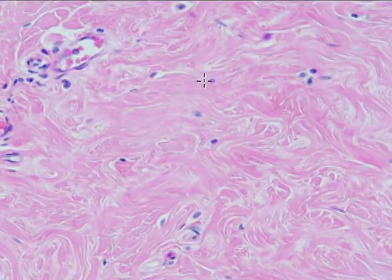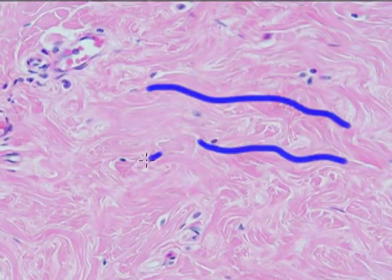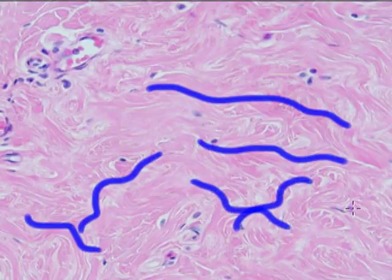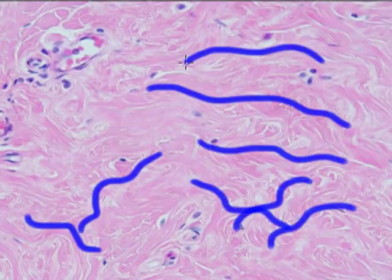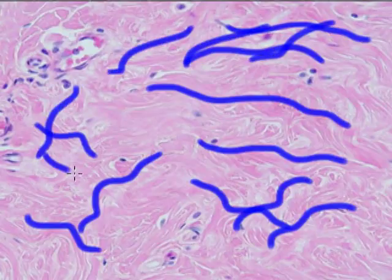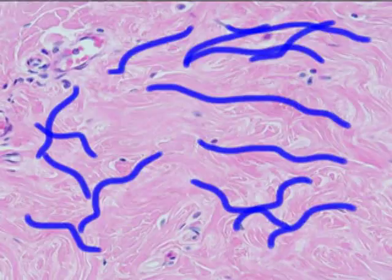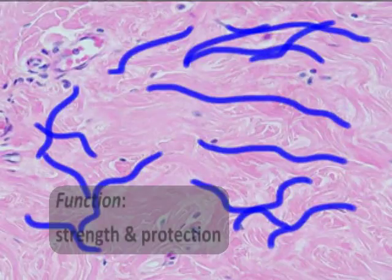But here, the bundles are moving in all directions—that's where the word 'irregular' comes from in our terminology. Irregular means diverse directions. So this tissue is interwoven together with these tough bundles of collagen fibers, and strength is a huge function of this tissue.